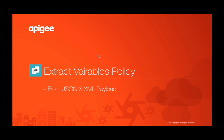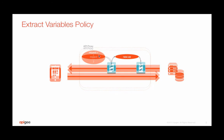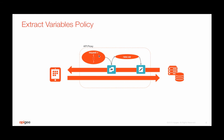Hi, in this video let's take a look at how to extract content from JSON or XML payloads. In the last video, we saw how to use the extract variables policy to extract new variables into the Apigee API proxy context during API call processing. We saw that we could extract these variables from existing variables such as query parameters or headers. In this video, let's take a look at how to extract from within an XML or JSON payload in the request or response message.